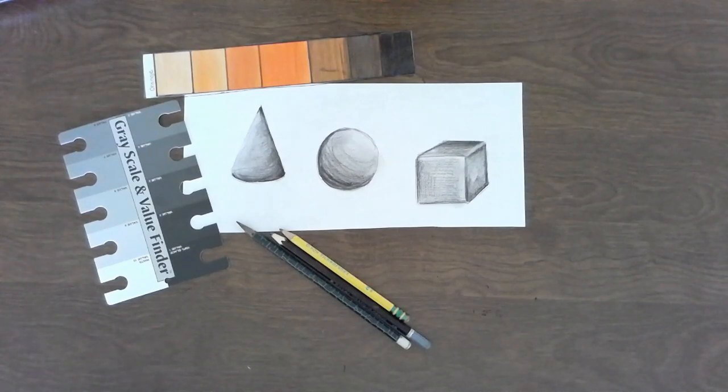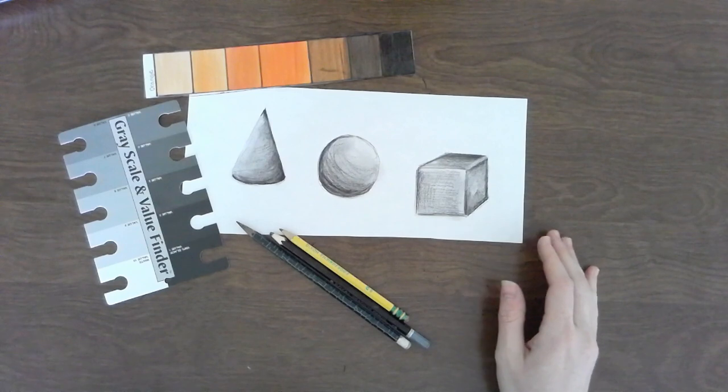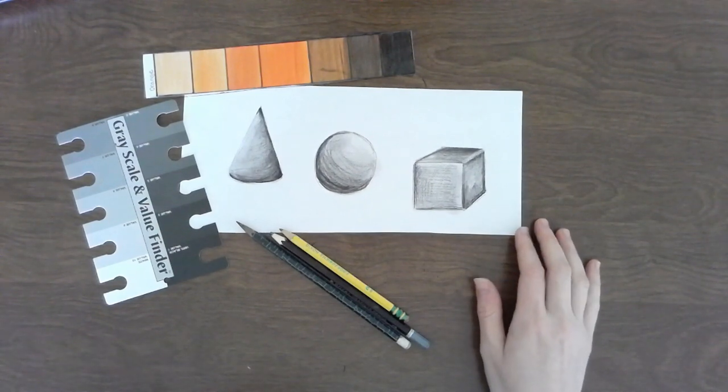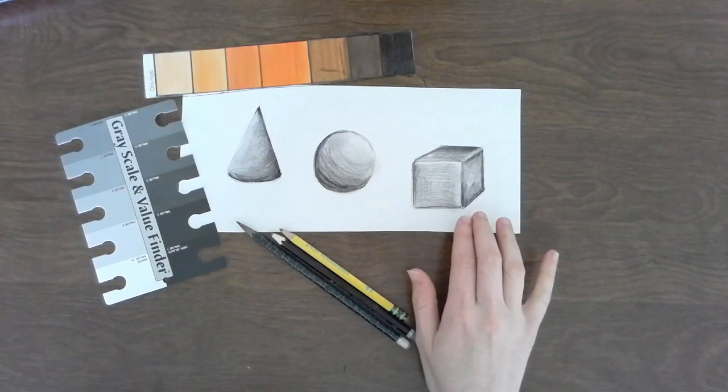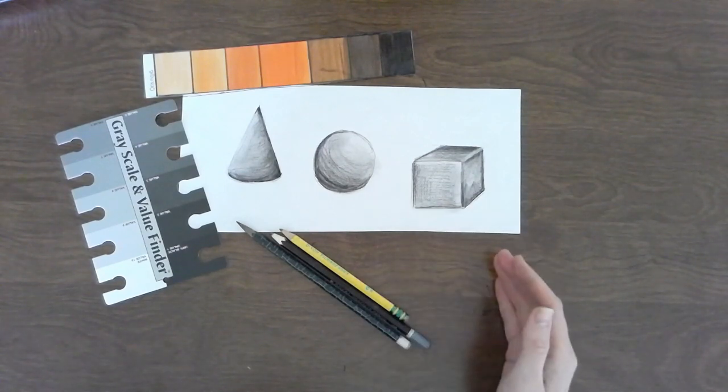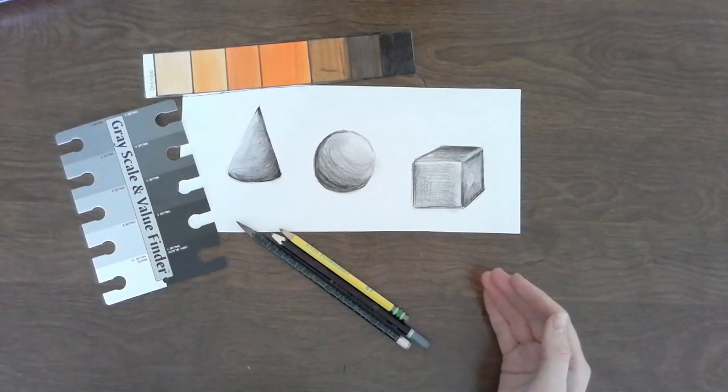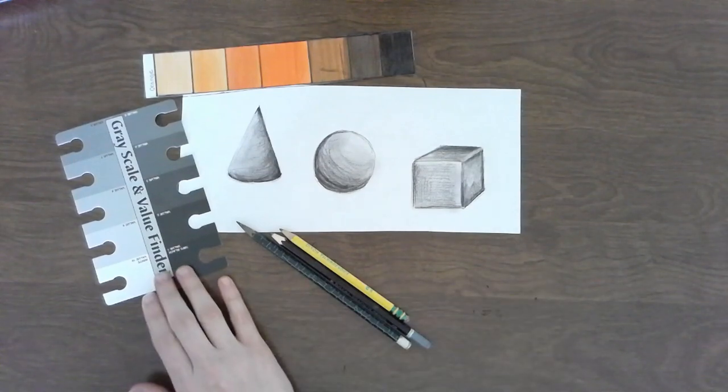Artists are constantly drawing on 2D surfaces and using value to make something look 3D. Here I have a cone, a sphere, and a cube that look more realistic and 3D simply by adding tones of gray and black and white. So that's called value.